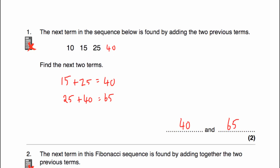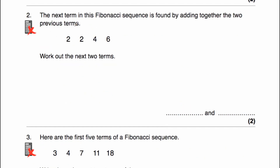Let's have a look at question number two. Question number two says the next term in this Fibonacci sequence is found by adding the two previous terms. Work out the next two terms. We start off with two and two. Two plus two is equal to four. Two plus four is equal to six. Four plus six is equal to ten. And six plus ten is equal to 16. So our next two terms would be 10 and 16.